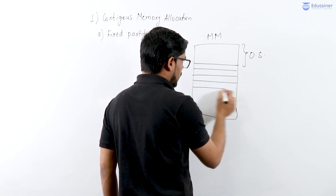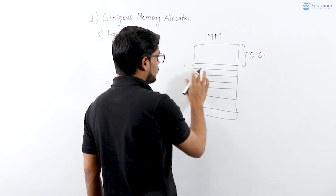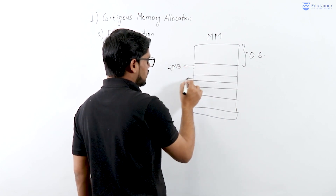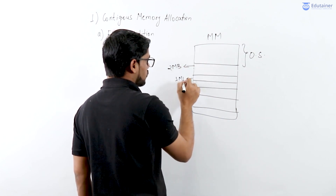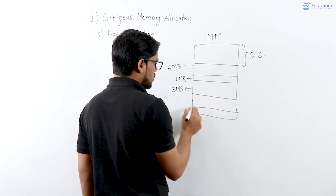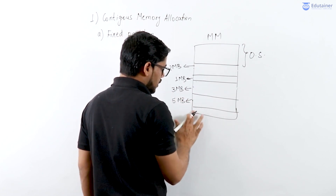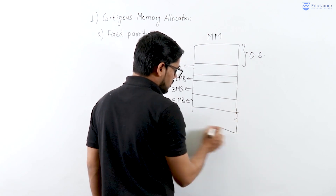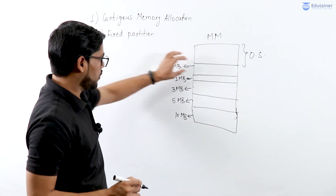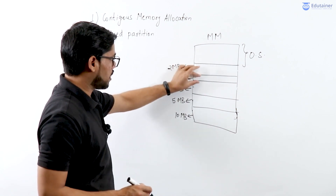After booting, we partition the main memory in a fixed manner. For example, we might have partitions of 2MB, 1MB, 3MB, 5MB, and 10MB. Each partition has a fixed size and the memory is divided this way throughout operation.